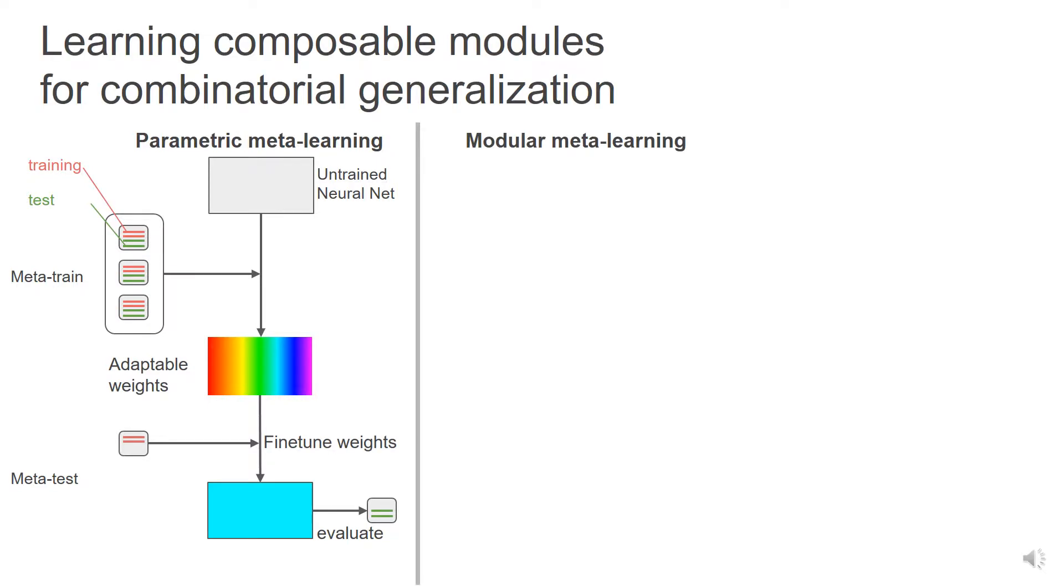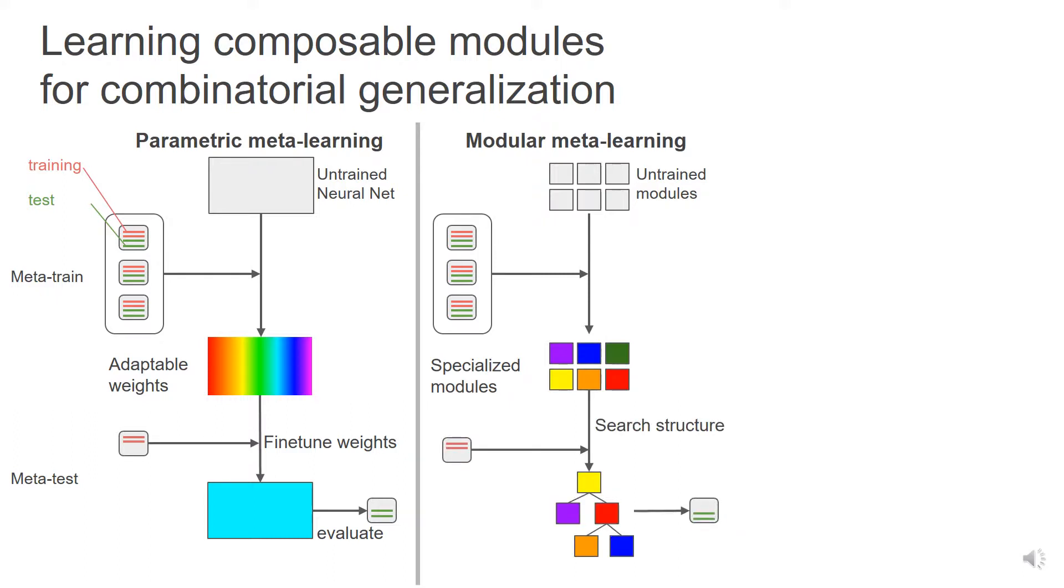In contrast, we propose modular meta-learning. We learn a small set of composable modules, each of them a small neural network with its own specialized role. We generalize to different datasets by composing the modules in different structures. By using modules for different tasks, we achieve combinatorial generalization.